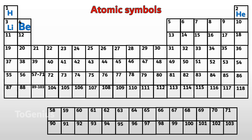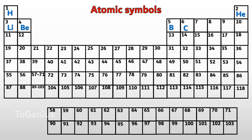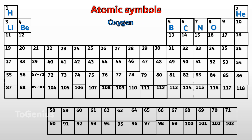Be — beryllium. B — boron. C — carbon. N — nitrogen. O — oxygen. F — fluorine. Ne — neon. In the same manner, fill up all the boxes in the table.